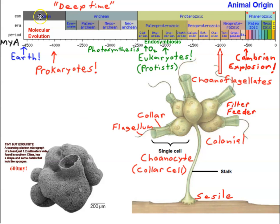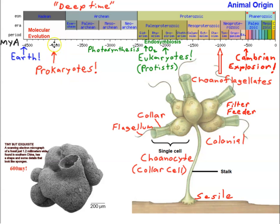Going back in geologic time to the formation of the Earth — about 4.8 billion years ago — that's where we begin on our geologic time scale. Very shortly after the formation of the Earth, when it was still hot, we had molecular evolution. Eventually, about 4 billion years ago — only about 800 million years after Earth forms — we see the appearance of the first prokaryotes. Those are basically bacteria: simple cells without a nucleus and membrane-bound organelles.